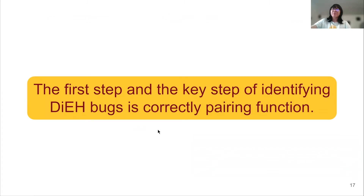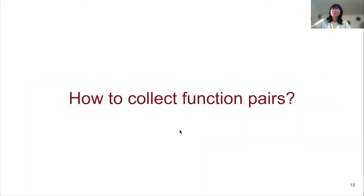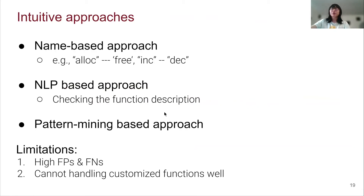The most important step of identifying disordered error handling bugs is correctly pairing functions. Our question becomes: how to collect function pairs correctly and comprehensively? I'd first like to introduce some intuitive approaches used by most previous work. The most commonly used approach is a name-based approach — searching function names to check if they include keywords like alloc, free, or increment/decrease. Some works also try a NLP-based approach, checking function descriptions to see if functions are allocation-related, free functions, or ref count-related functions.